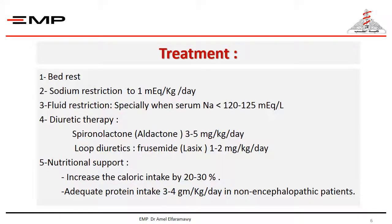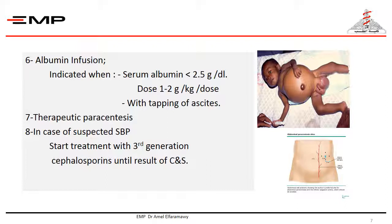Nutritional support and adequate protein intake in non-encephalopathic patients is important to compensate for hypoalbuminemia. Hypoalbuminemia must be corrected by albumin transfusion if serum albumin is less than 2.5 gram per deciliter, as well as during tapping of ascitis to prevent rapid reaccumulation of ascitic fluid. In case of tense ascitis with impairment of breathing, therapeutic paracentesis under complete aseptic conditions can be performed.